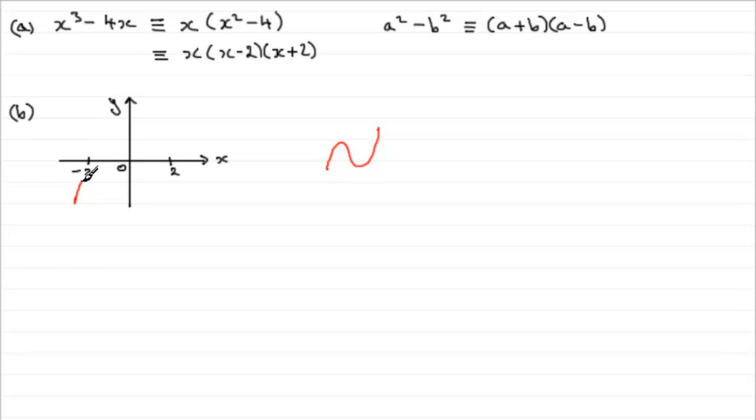And so we should be able to sketch something like this. We're going to have it coming up through here, through the minus 2, going up like that, down, round, and back out again. So that would be the graph then of y equals x cubed minus 4x. Well, that's part b.